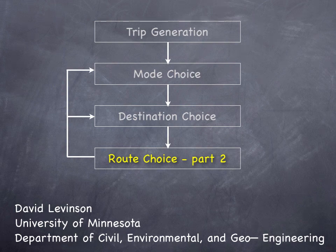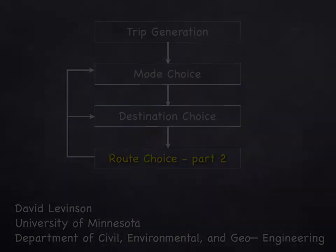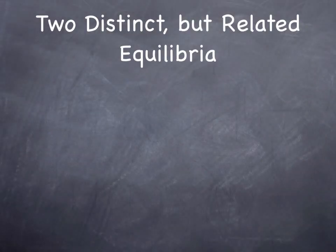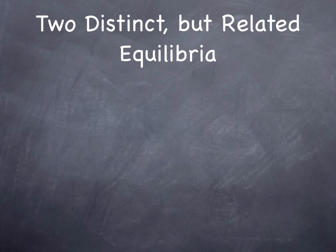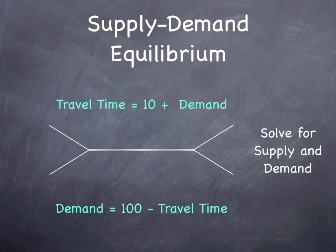We continue talking about route choice. There are two distinct but related equilibria: supply-demand equilibrium and a route choice user equilibrium given fixed demand. In the supply-demand equilibrium, we need to ensure that the travel costs on which demand decisions are based equals the outputs of the route choice model for that given demand.